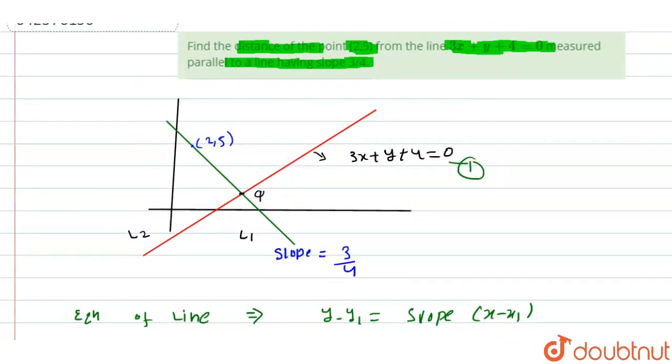We have the coordinates of Q as (-2, 2). Now we find the distance between Q and (2,5).